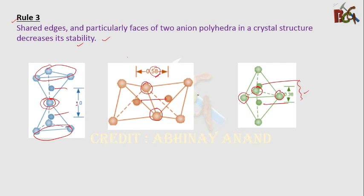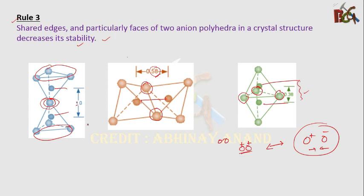The reason stability decreases is that cations with the same charge repel each other. When edges or faces are shared, the cations come closer together, increasing repulsion. Corner-sharing keeps cations further apart and is therefore more stable. This effect is especially significant in silicate structures where higher-charge cations are involved.